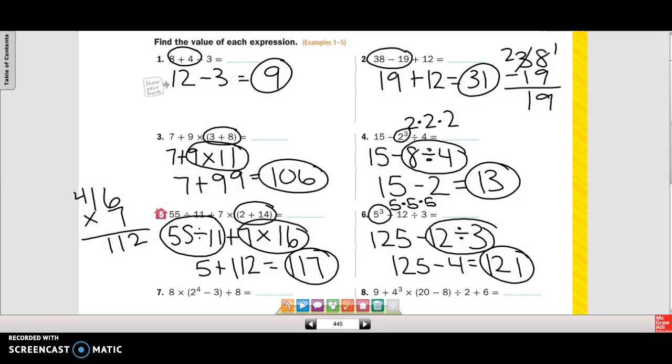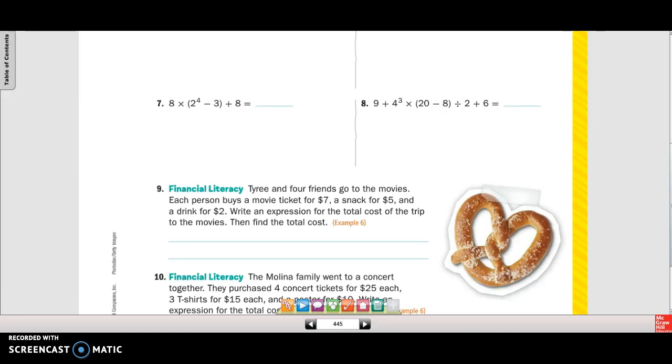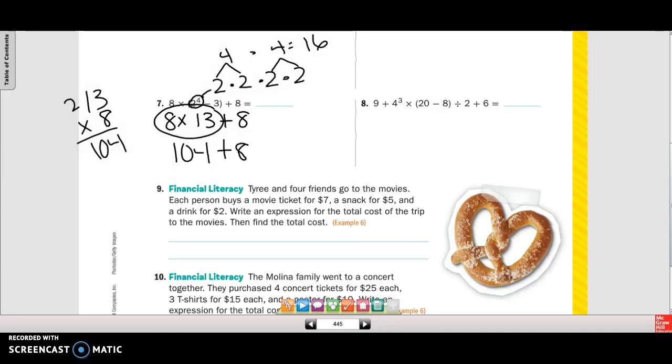Okay, I'm going to go down to 7 and 8, but I need to clear the board out first. Okay, in this one, I have parentheses, but inside of it, I need to actually solve 2 to the 4th first, because I can't do 2 to the 4th minus 3. So that's 2 times 2 times 2 times 2. So let's see, that's 4, that's 4. 4 times 4 is 16. So 16 minus 3 is 13. So I'll rewrite this now. So I'm going to do 8 times 13. That's 104 plus 8 is 112.